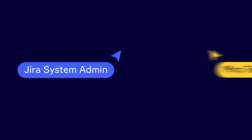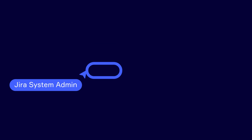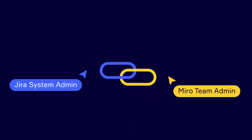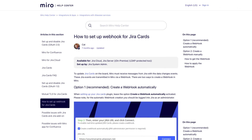To set up the JIRA cards integration, you must be a JIRA system admin and a Miro team admin. You can connect the two accounts by configuring an application link in JIRA using information from Miro, and then set up a webhook. Check the Miro help center for detailed instructions.